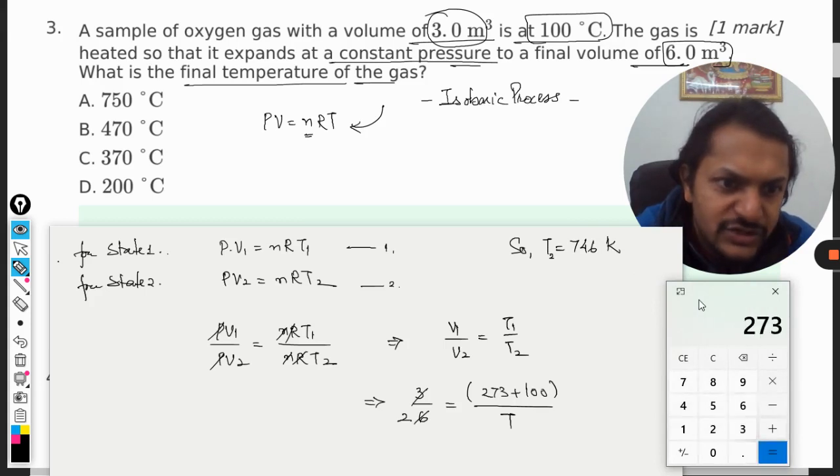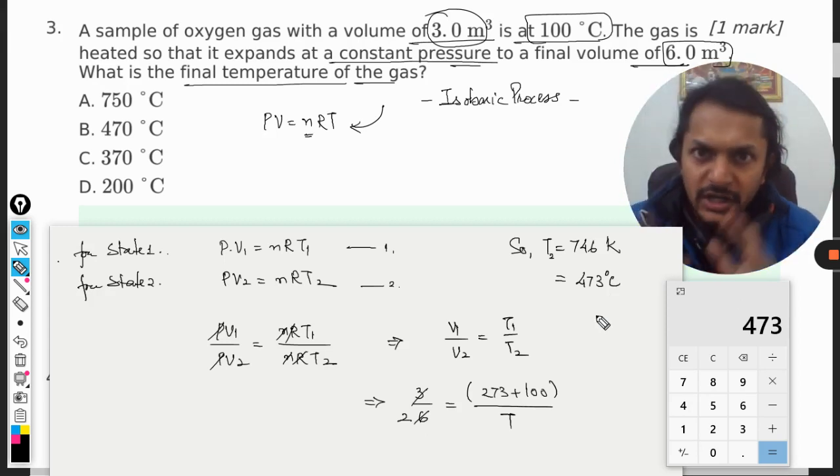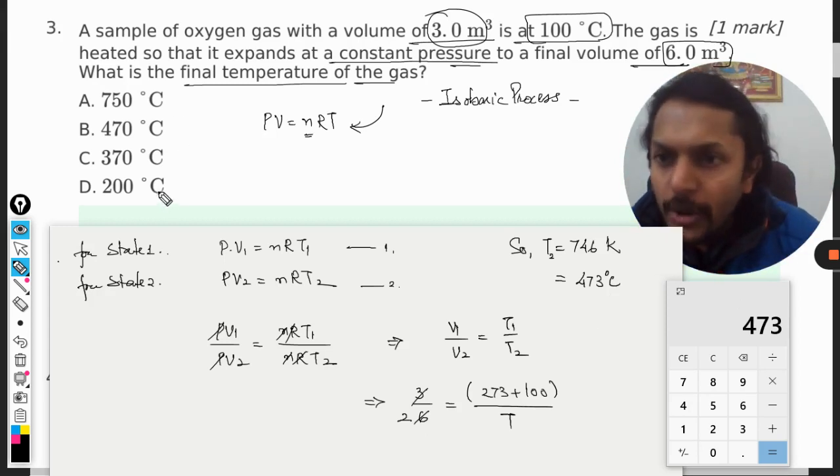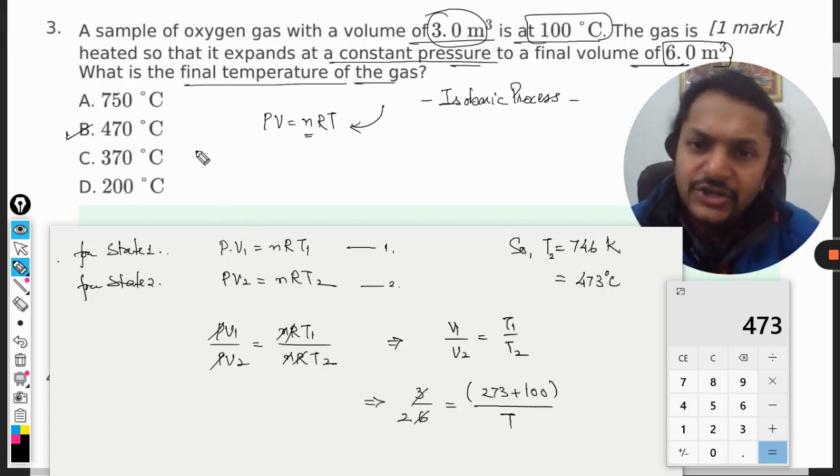Now minus 273, the answer will be 473°C. Now we are moving to our options given here. B is the nearest option, that is 470°C. So this is how we do this question.